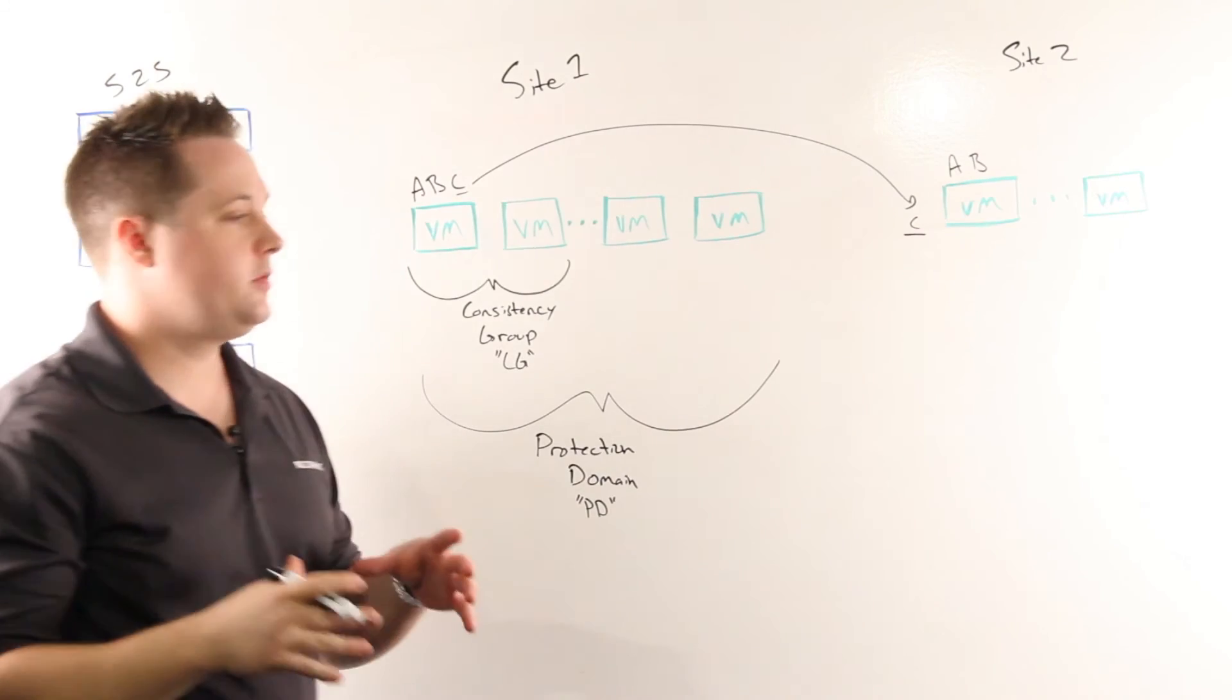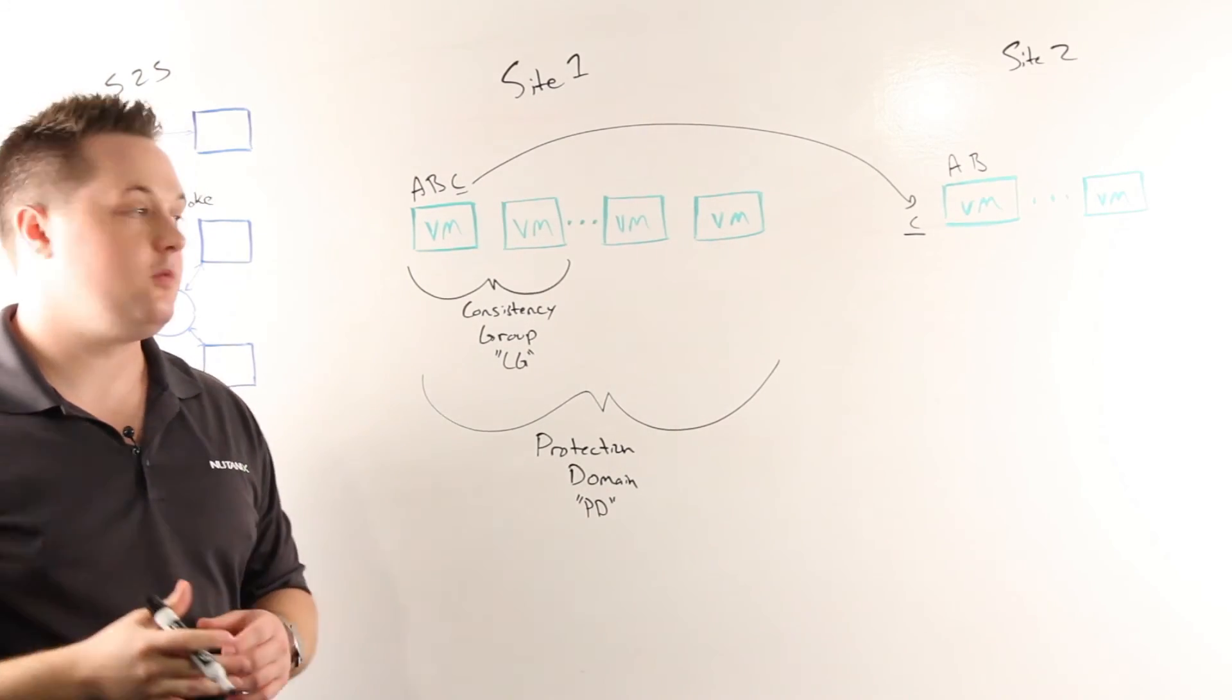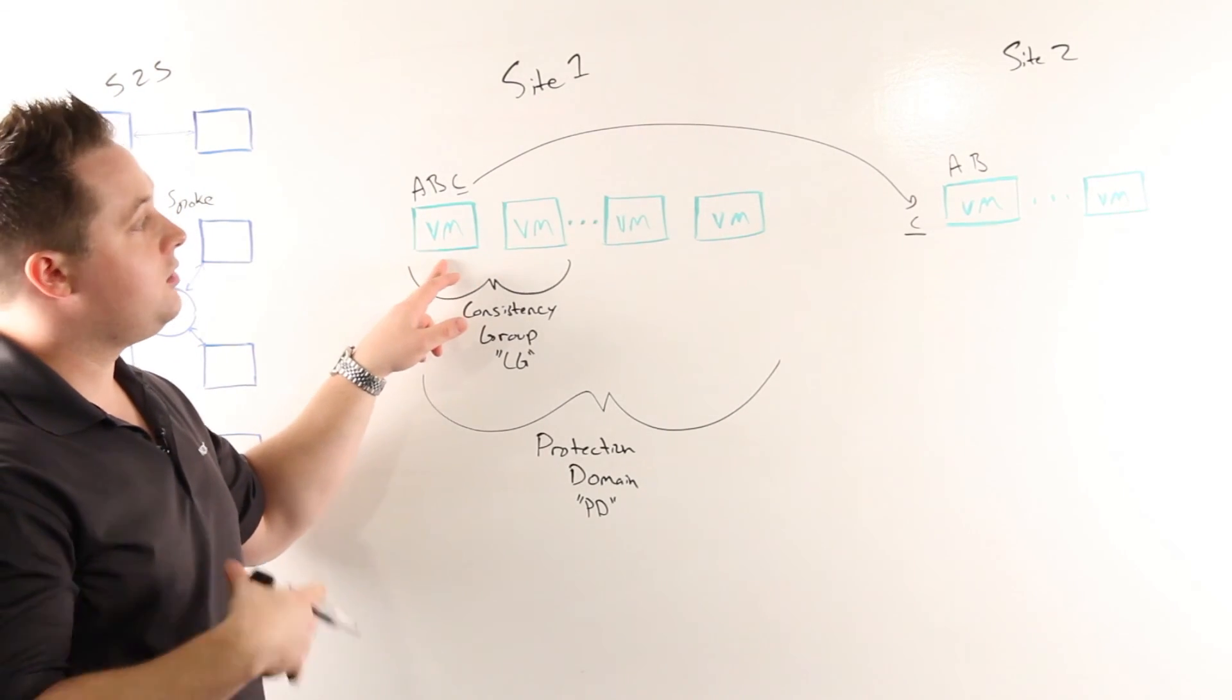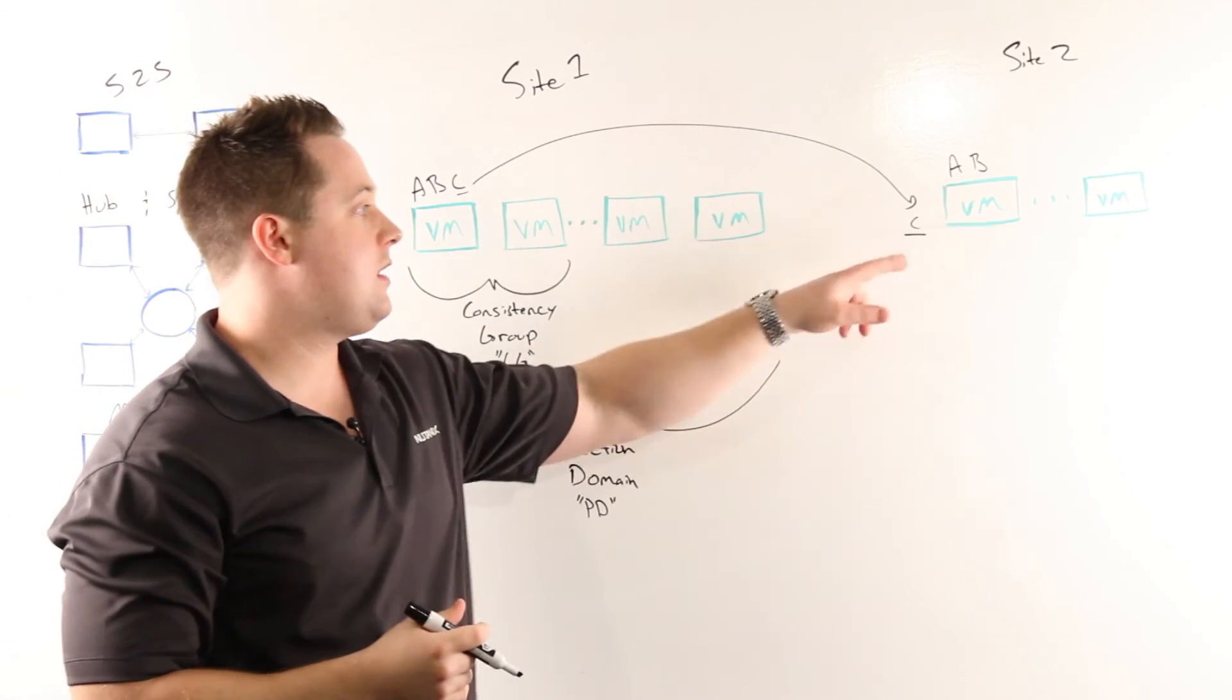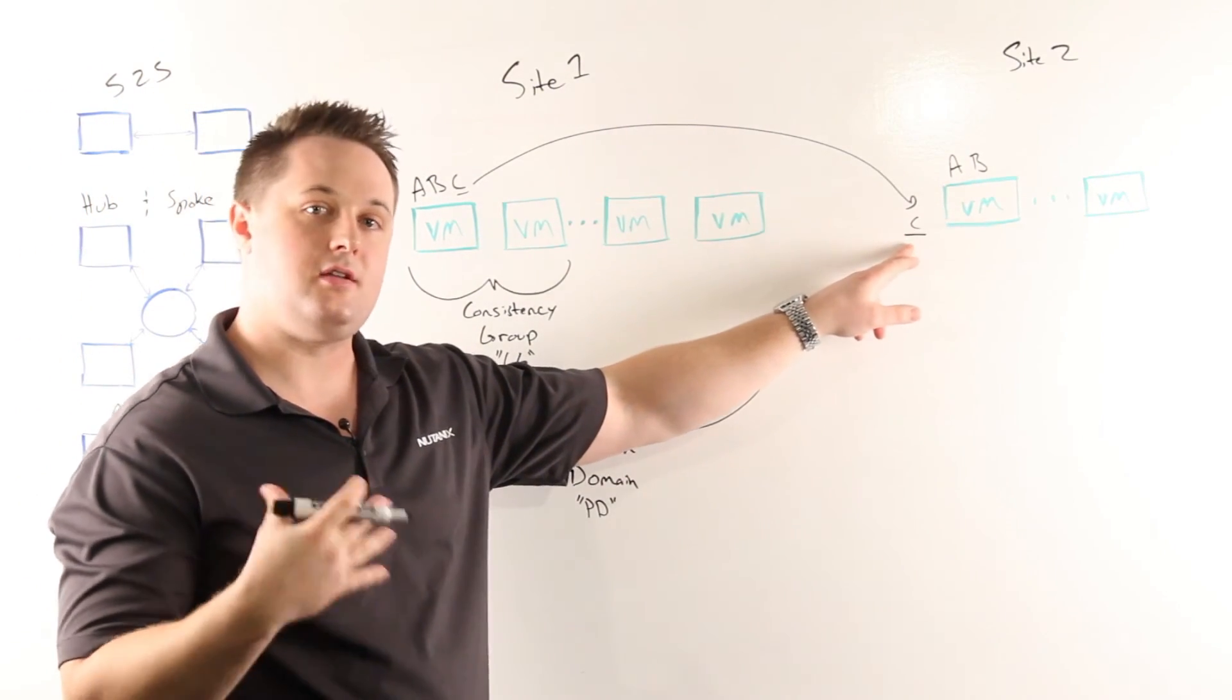This is extremely important when we start talking about replication bandwidth, because essentially we've just taken two-thirds of what we would have previously required and eliminated that down to only sending the data that doesn't exist there.